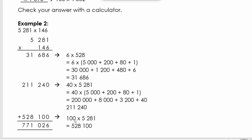Then lastly we got the 100. So if we multiply 100 with 5,281, because it's 100 we just add two zeros and we take that answer and we write it here. Then we take these three numbers and we're going to add it and we get 771,026.